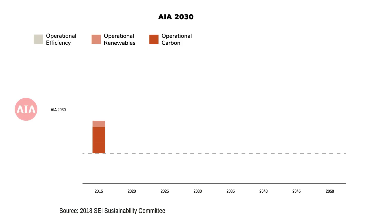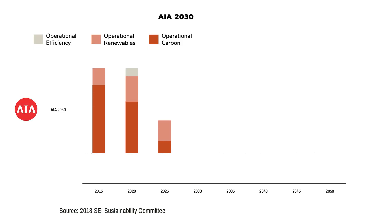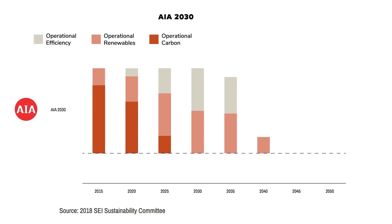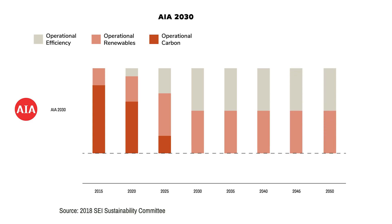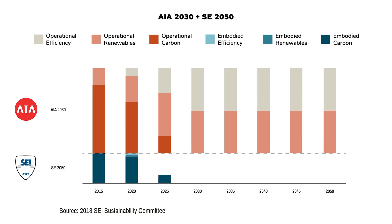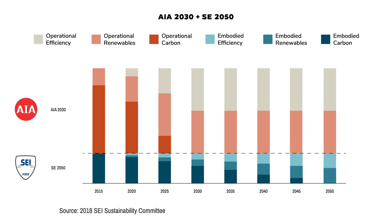Within the AEC industry there are a variety of programs with different targets. AIA 2030 was launched in 2006 trying to achieve operational carbon neutrality by 2030. Then in 2020, SE 2050 was launched — a commitment program to reduce the embodied carbon of structural materials to net zero by 2050.